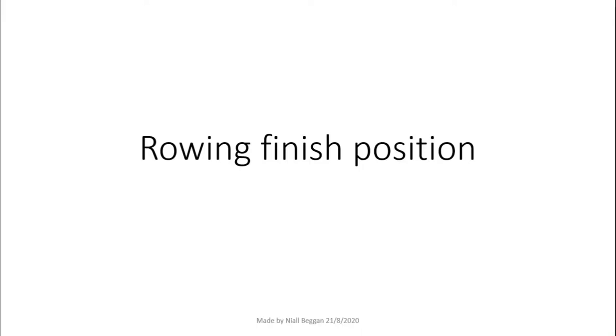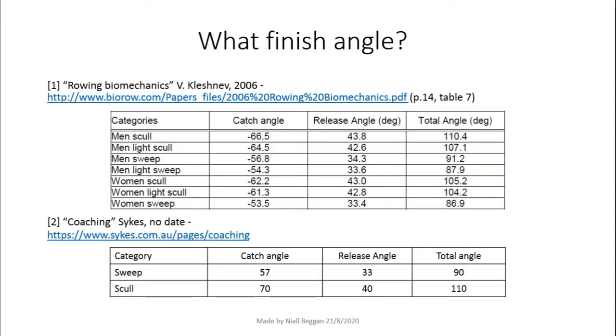In this video, I investigate rowing finish angles and finish positions from the 2017 World Rowing Championships and draw some interesting conclusions. These are some tables of angles I found online. You can see Kleschnev suggests about 43 degrees and Sykes rowing suggests 40 degrees for a sculling finish angle. I will investigate whether these values are used at the elite level.